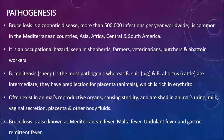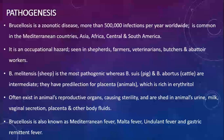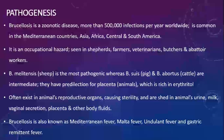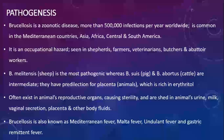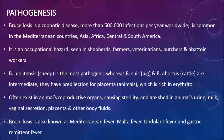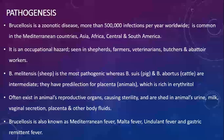Brucellosis is an occupational hazard, commonly seen among shepherds, goatherds, farmers, veterinarians, butchers, and abattoir workers because they come in contact with animals. Brucella melitensis is associated with sheep, Brucella suis with pigs, and Brucella abortus with cattle. These bacteria have a predilection for the placenta, which is rich in erythritol, and are therefore frequently responsible for abortions in animals — as the name 'abortus' suggests.